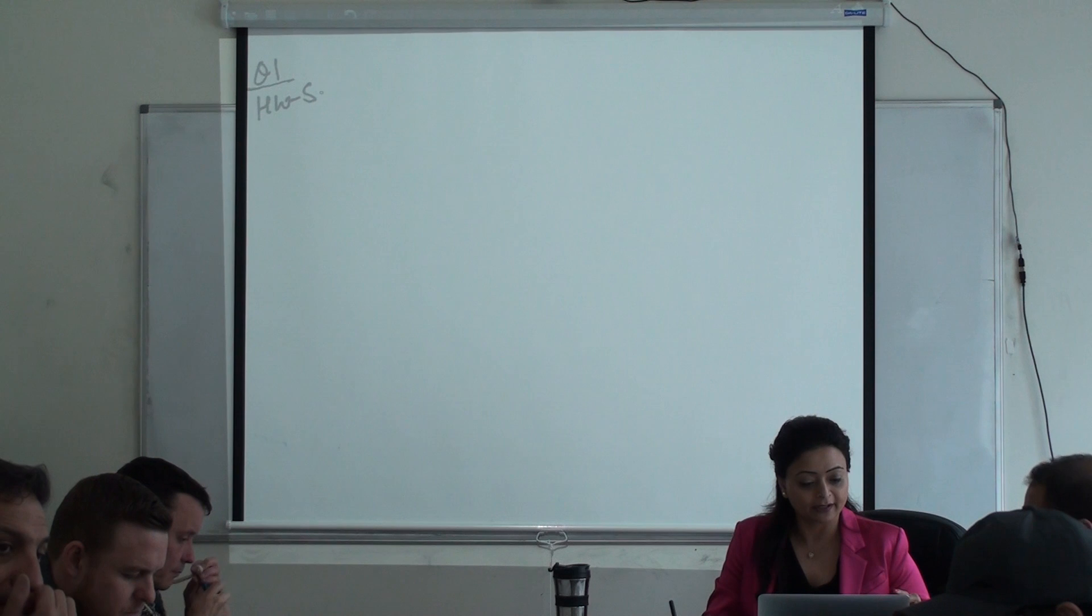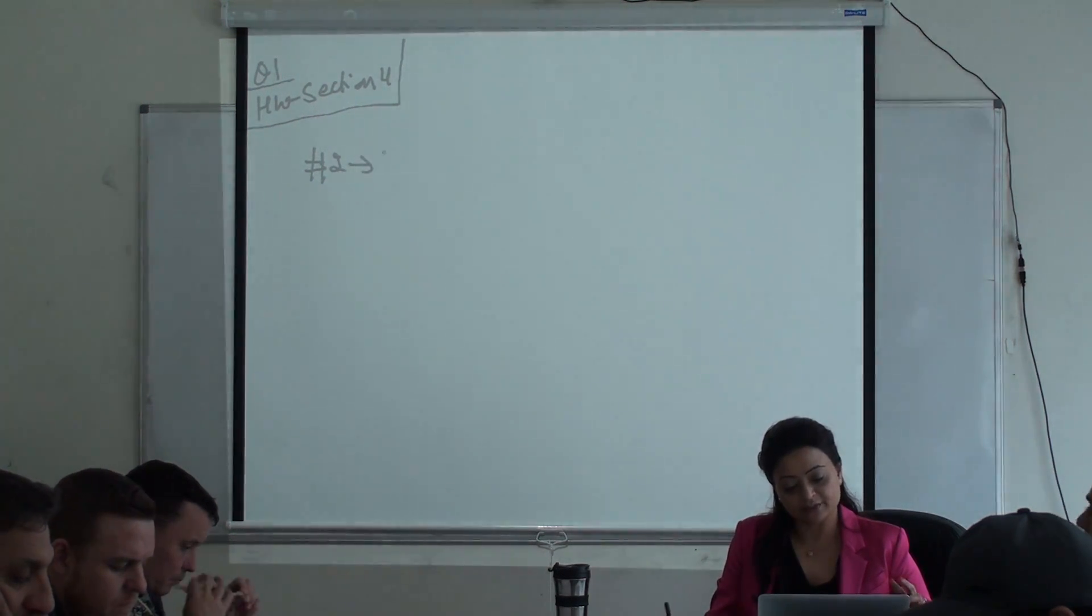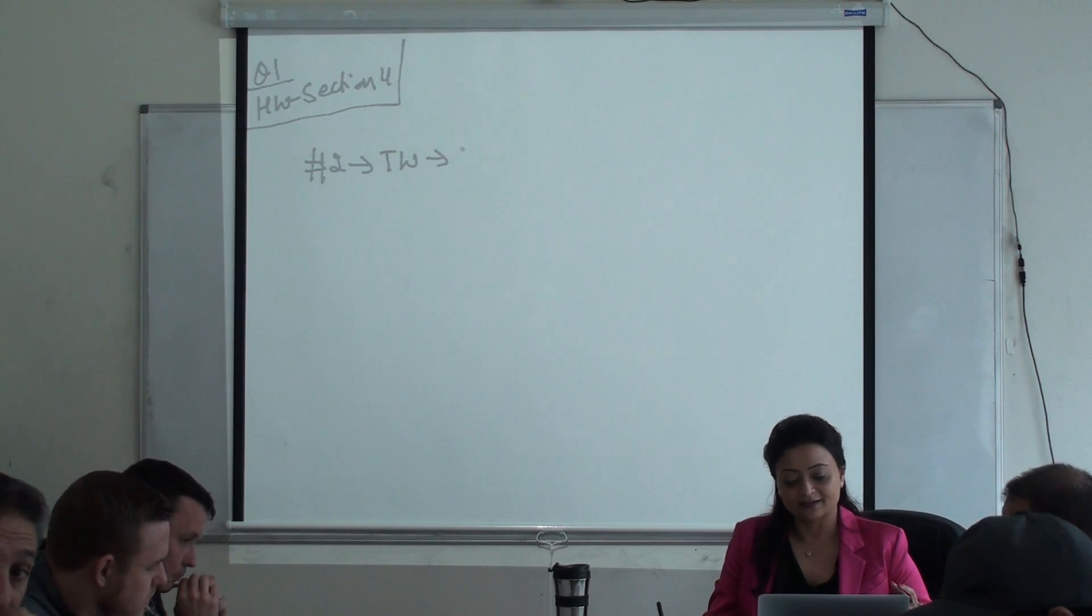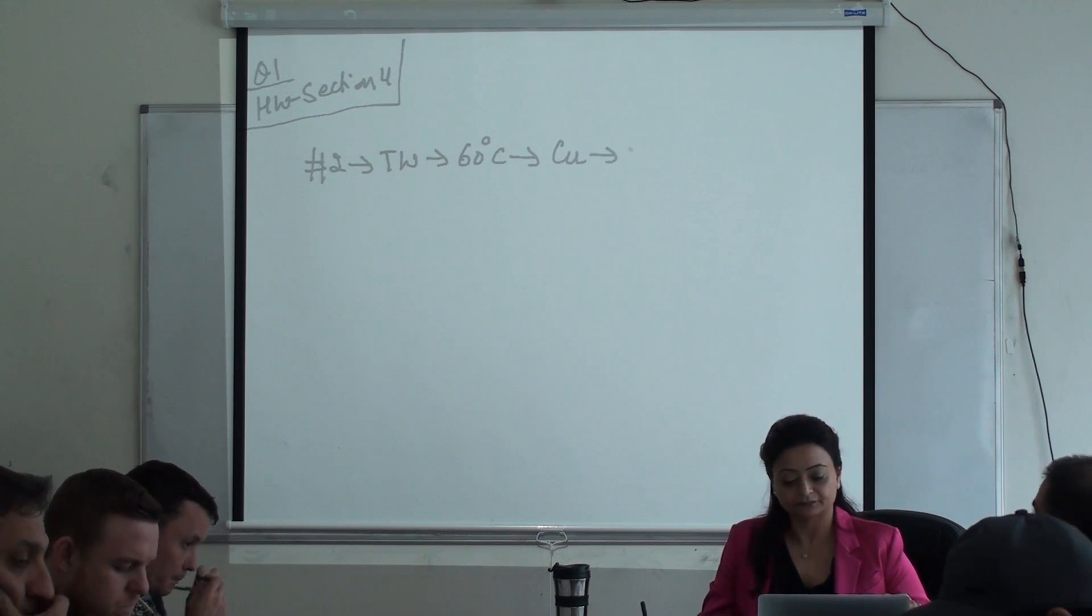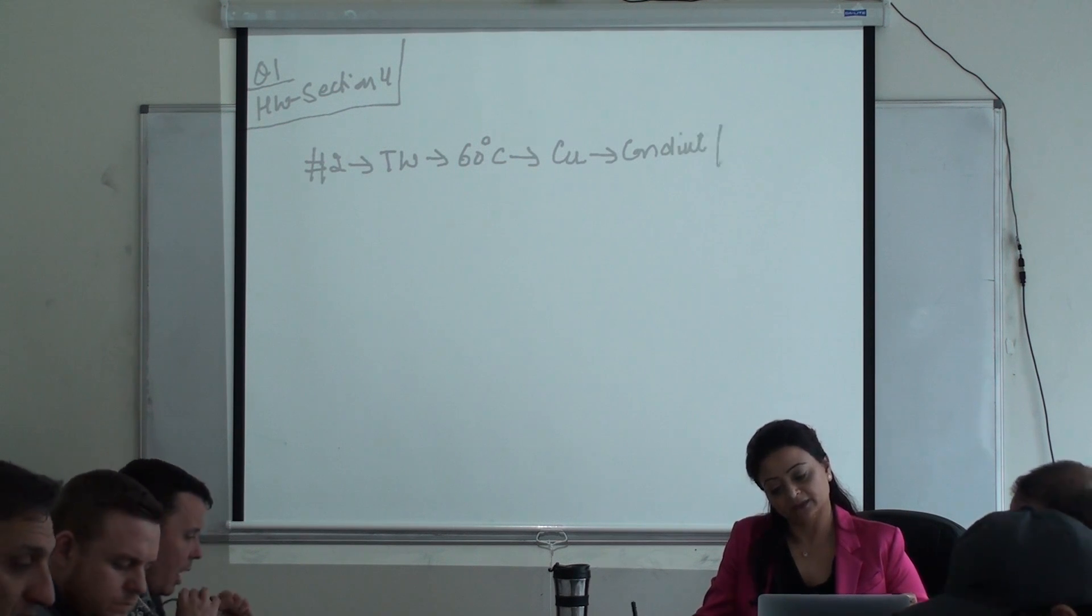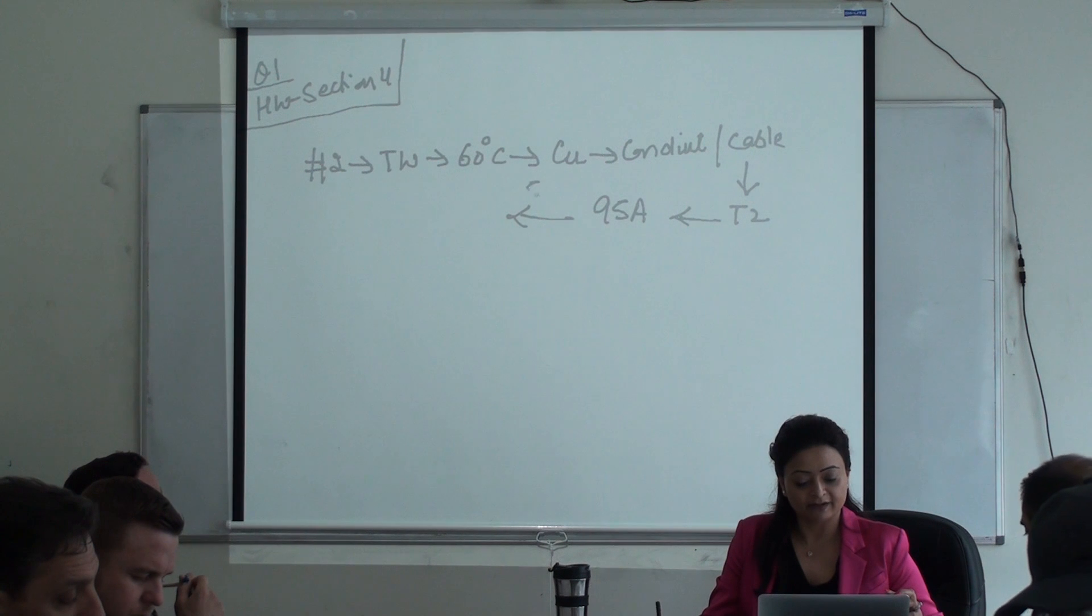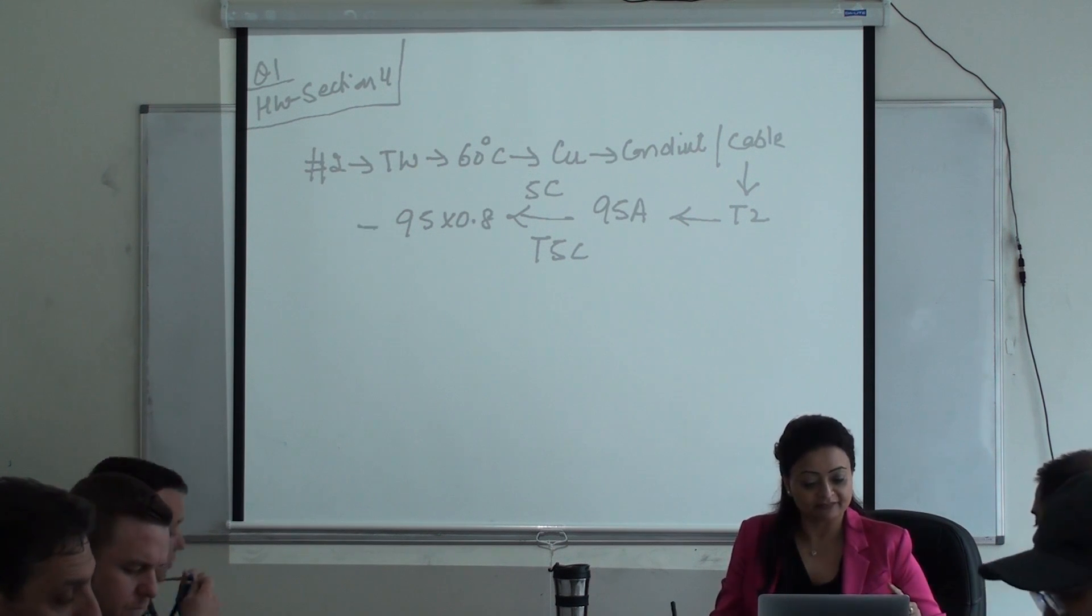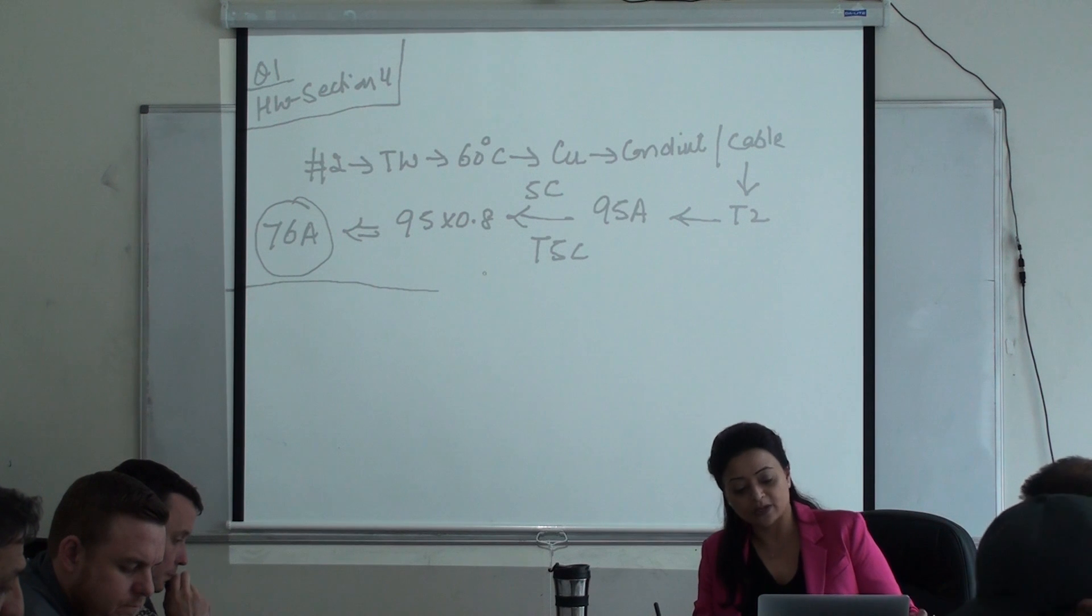We're going to keep going on homework assignment. Question number one. What is the maximum current that five number two copper TW conductors can carry when running a raceway or cable? Number two and TW, that's correct. So we go to 60 degrees C column, copper. What table am I going to go to? Table two, because it's in a conduit. On table two, what's your ampacity? 95 amps. How many wires? Five wires. So table 5C will be 80 percent. What's my 95 times 0.8 answer? 76 amps.